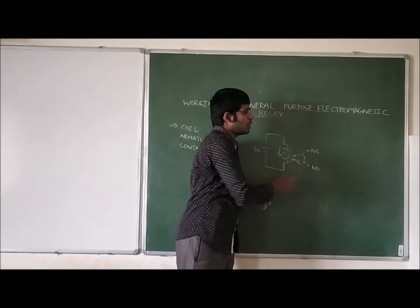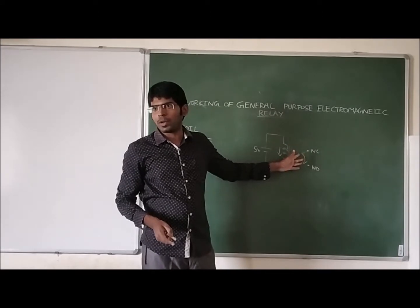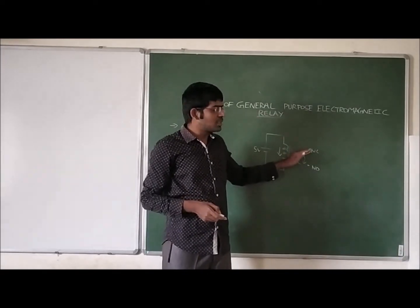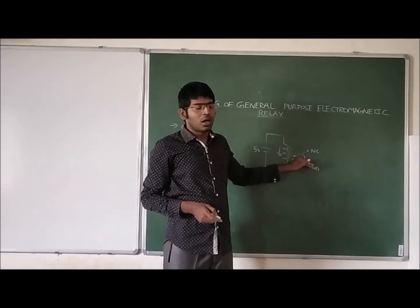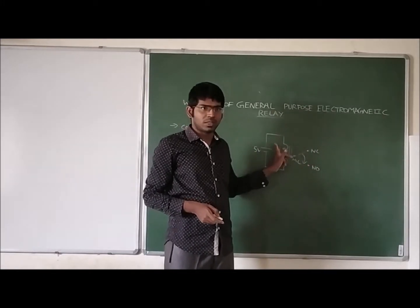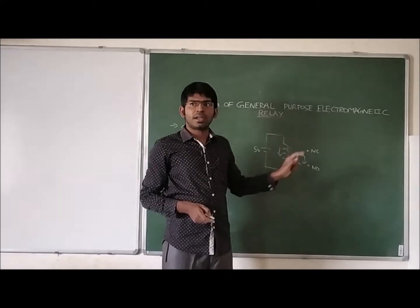The armature is moving from normally closed to normally open. This armature is moving from here to here. Why is this armature moving from here to here? Because of the magnetic field lines. Why are magnetic field lines attracting this armature?